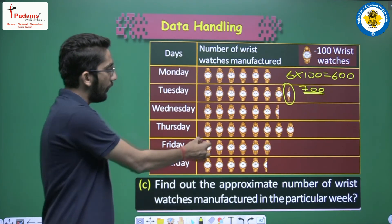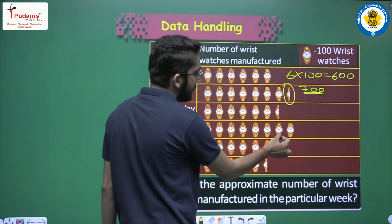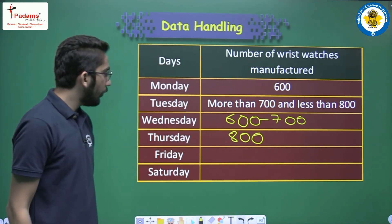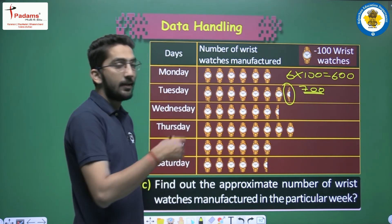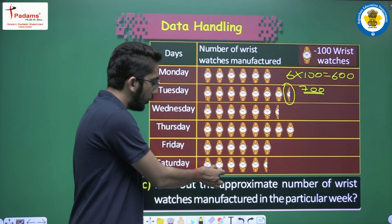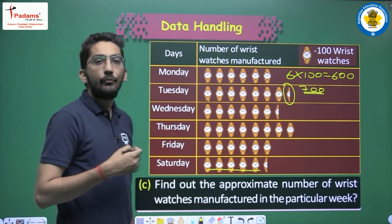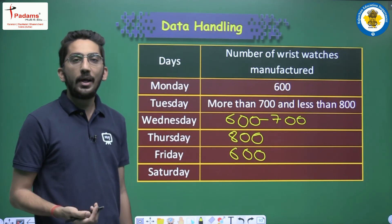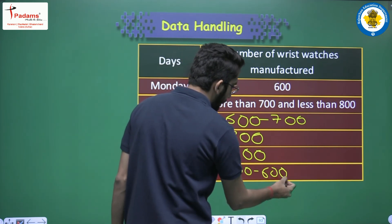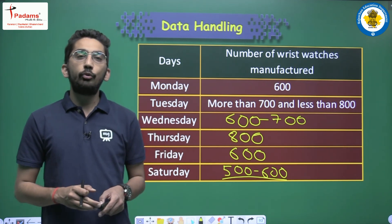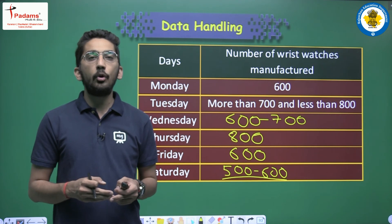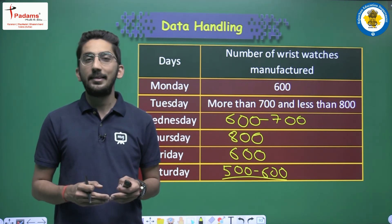Thursday has 8 complete images, so exactly 800 watches. Friday has 6 complete images, so 600 watches. Saturday has 5 complete images and a half, so between 500 and 600. So we have filled the complete table with approximate values. In this lecture, we covered: what is data, how to organize data using tally marks, and what a pictograph is. In the next video we will take up the first exercise. Till then, goodbye, see you in the next one.